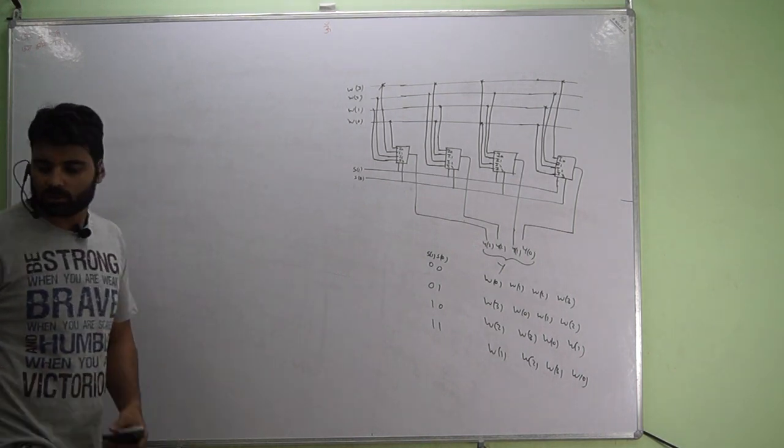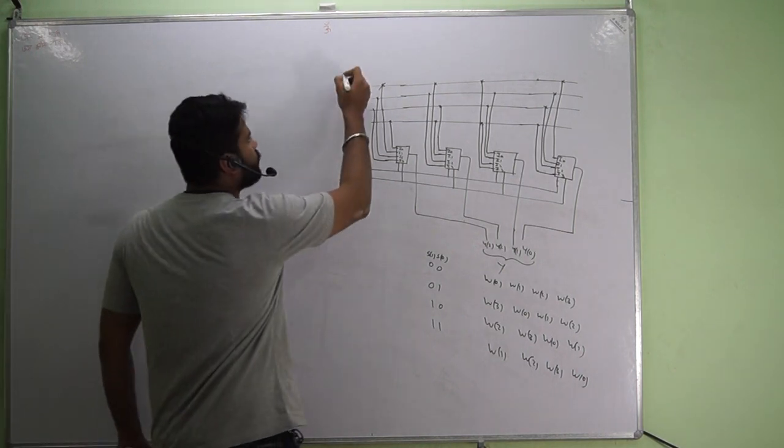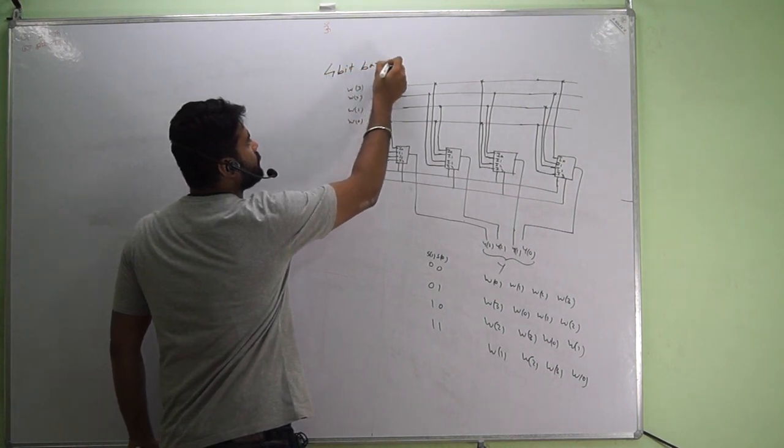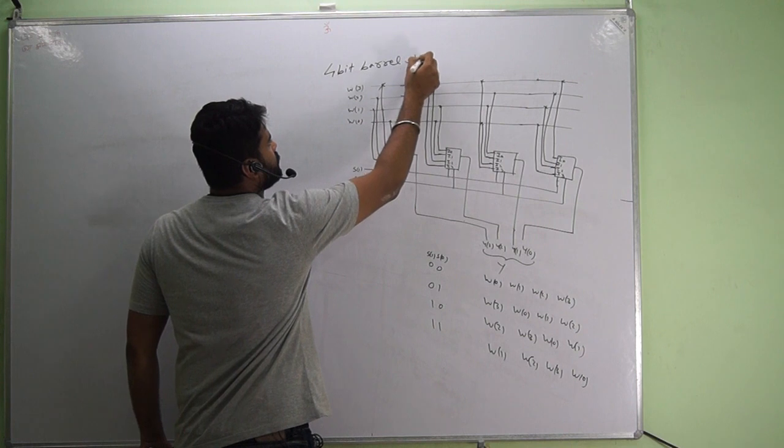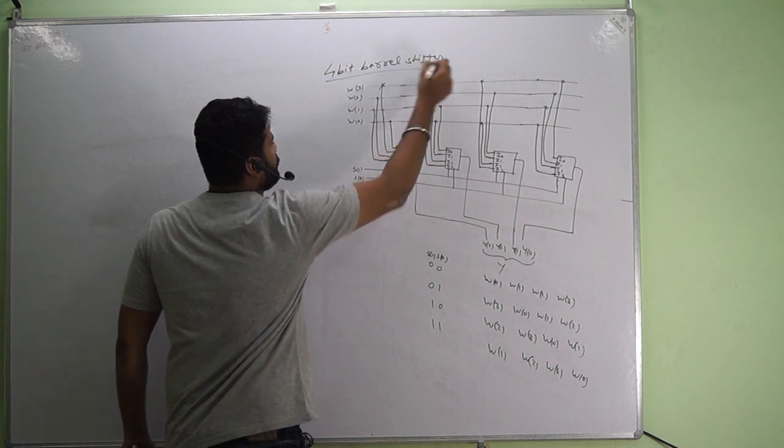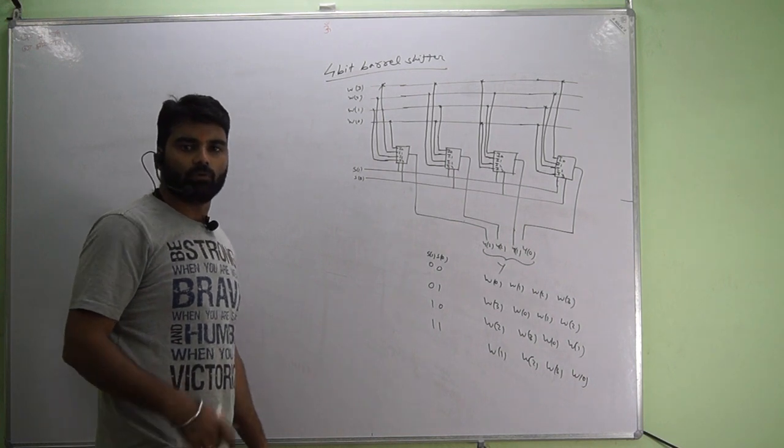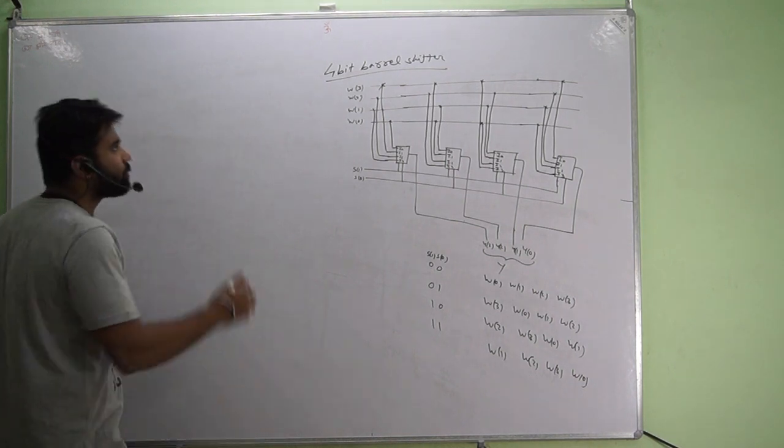Welcome everyone, this is barrel shifter we are discussing, 4 bit barrel shifter. For reference I have drawn the diagram as already discussed. Now we will deal with the VHDL program.